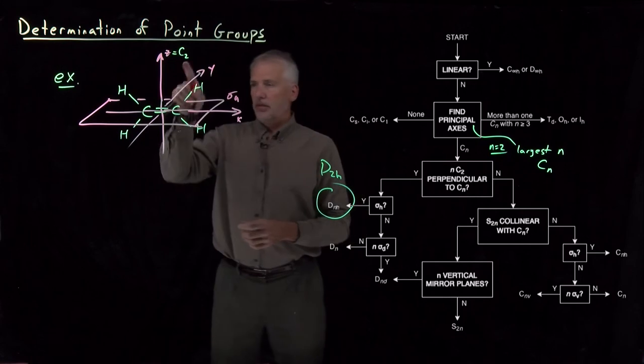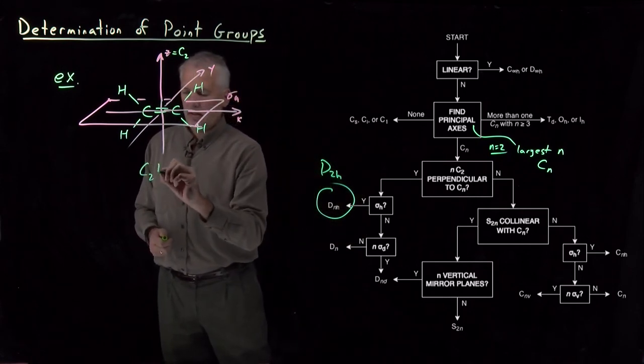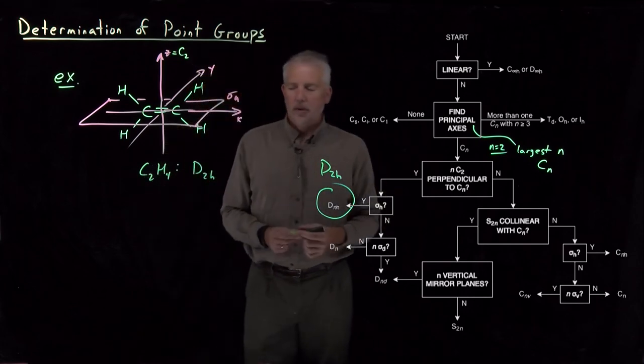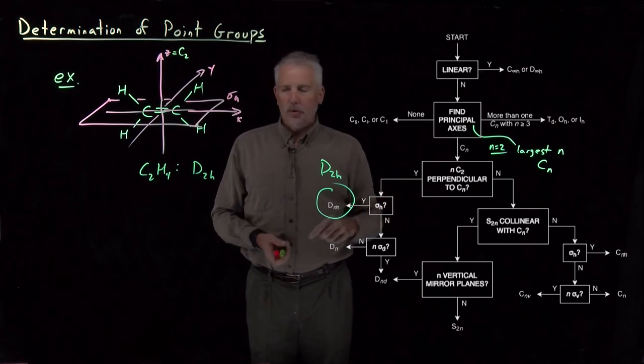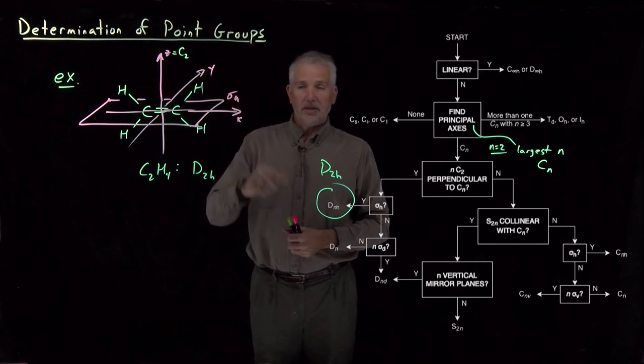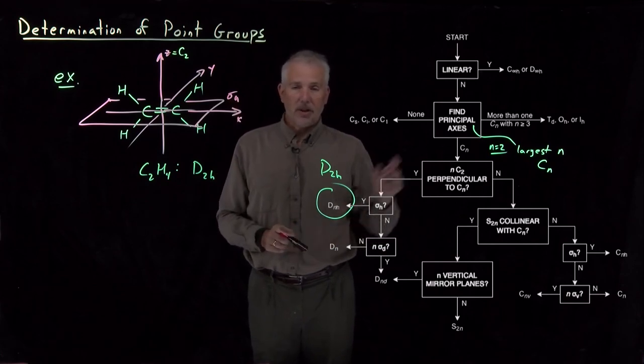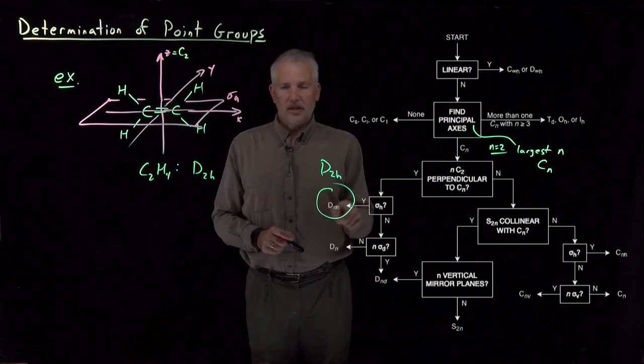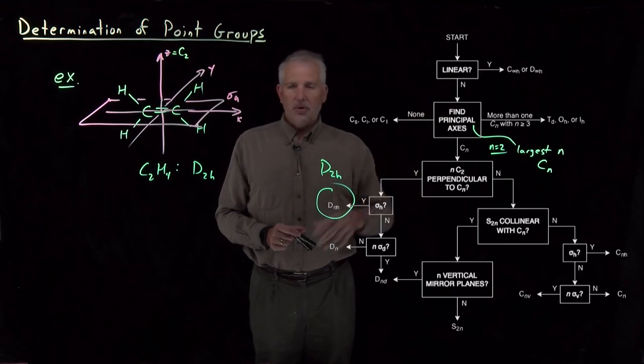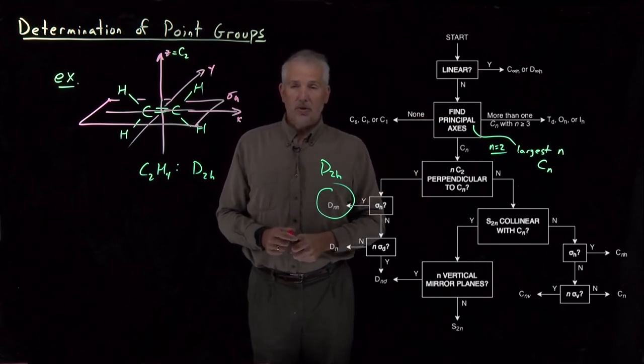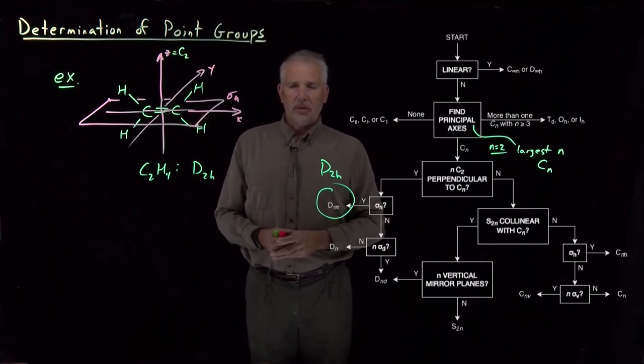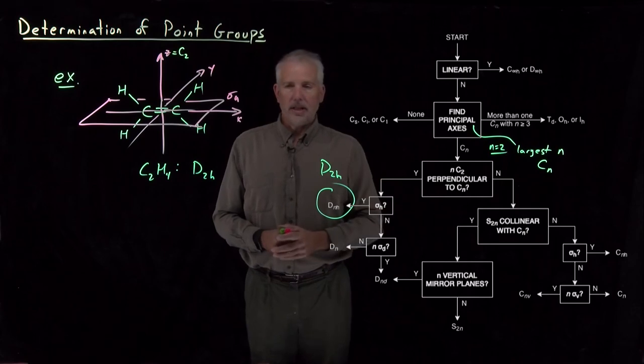So C2H4 ethylene is in the D2h point group. And that was a little bit easier just having to answer these few questions than having to identify all the symmetry elements. For example, there's some other sigma planes, some sigma v planes that we didn't have to bother to find because once we had answered these questions, we knew the point group had to be D2h. So using this approach to finding the point group tends to be a little less error prone because you can answer specific targeted questions, you don't have to find all the symmetry elements of the molecule. So hopefully that makes it easier to identify point groups.